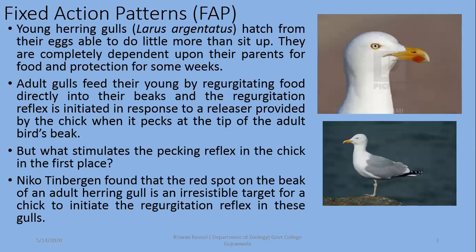In your textbook, the example of young herring gulls is shown. They hatch from their eggs and are able to do little more than sit up. These are altricial birds — those which do not show any specified movement when they hatch. At the time of hatching they are helpless and completely dependent upon their parents for food and protection for some weeks.